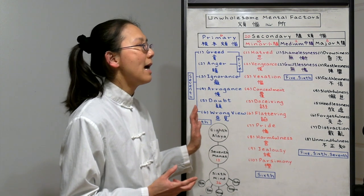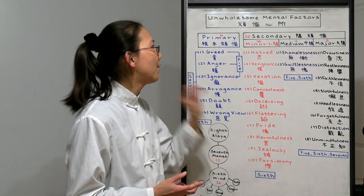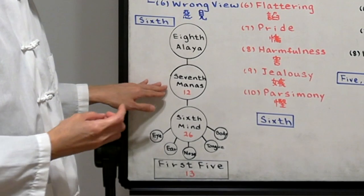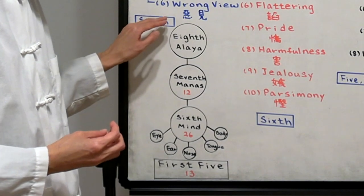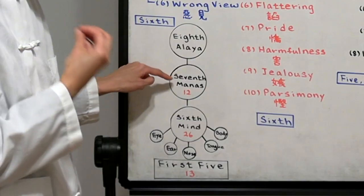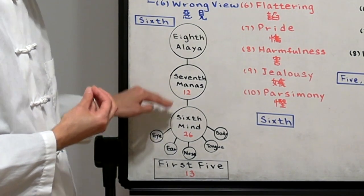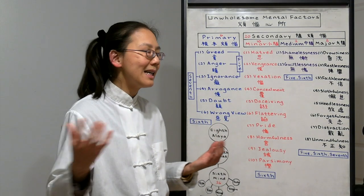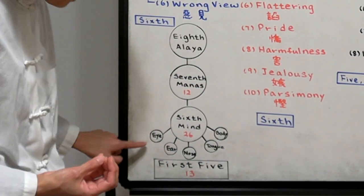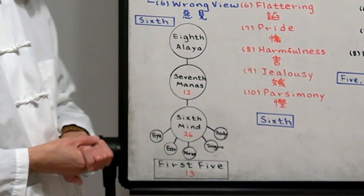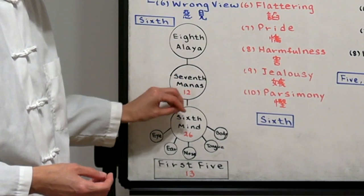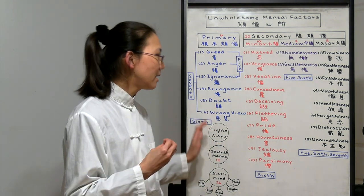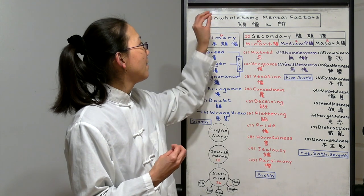The eight consciousnesses, they all have a different number of unwholesome mental factors. The eighth one is alaya consciousness, the big storehouse that stores all our karmic seeds. The seventh consciousness is our manas, which attached to the eighth consciousness, thinking there is a real me and a real self. It's called the manas. Then the seventh consciousness tells the sixth consciousness, our mind, what to think, how to think about situations that we experience in our life. Then we have the first five consciousnesses, eyes, ears, nose, tongue, body consciousness. So these five, they work outside. And the sixth consciousness is their manager. These are the eight consciousnesses of how our mind functions. So the eight consciousnesses all have different kinds of unwholesome mental factors.